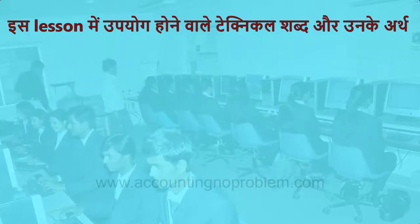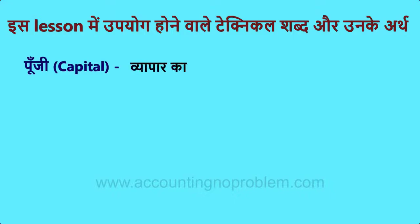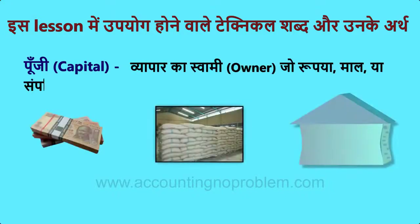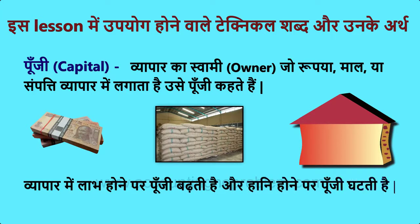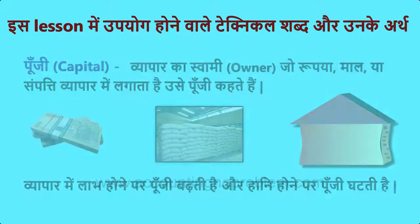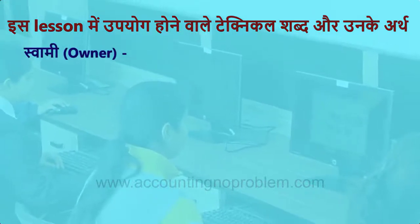पूंजी यानि Capital — व्यापार का स्वामी यानि Owner जो रुपया, माल या संपत्ति व्यापार में लगाता है उसे पूंजी कहते हैं। व्यापार में लाभ होने पर पूंजी बढ़ती है और हानि होने पर पूंजी घटती है। Accounting में व्यापारी और व्यापार दोनों को अलग-अलग माना गया है, इसलिए व्यापार में Owner द्वारा लगाई गई पूंजी व्यापार की liability मानी जाती है। जैसे विकास ने 20,000 रुपए नकद और 10,000 के माल से व्यापार प्रारंभ किया तो पूंजी 30,000 रुपए होगी।